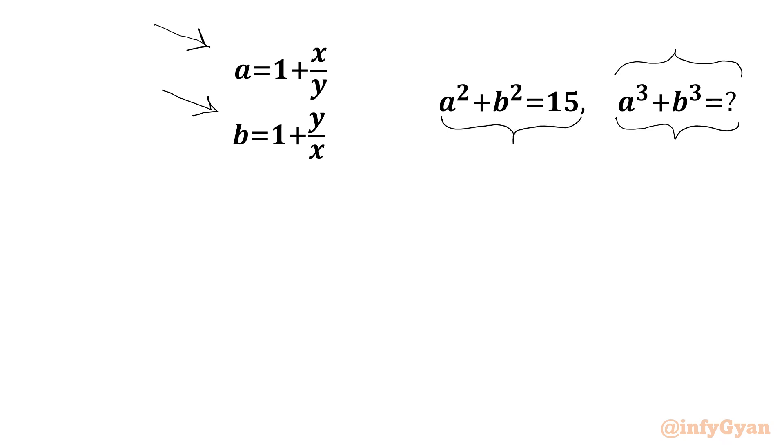Another information is given: x and y are positive real numbers. Now x over y is a positive real number. Of course x is positive, y is positive, so x over y will be positive. 1 plus a positive real number will give us a positive real number.